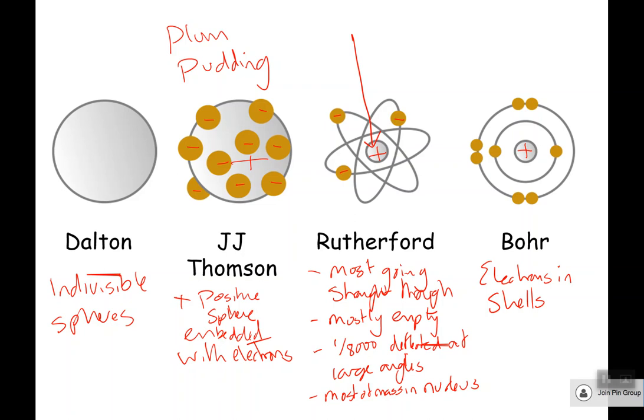So there you go. Dalton, indivisible spheres. J.J. Thompson, the plum pudding model, where you've got a positive amorphous sphere with negative electron dots around the inside. Rutherford, the nuclear model, he said that you've got a very small nucleus, very dense, positive, mostly atoms empty space, and these electrons orbit. And then Bohr, we've got a nucleus again, positive, but the electrons orbit in shells.